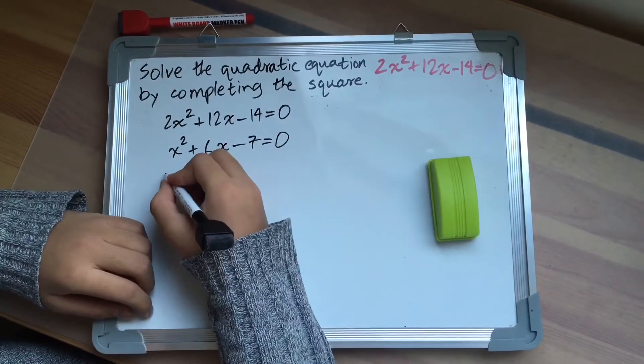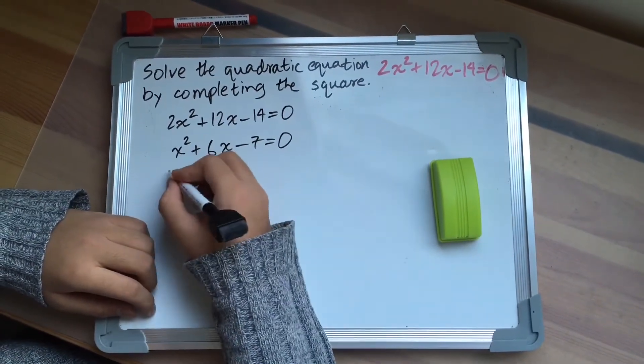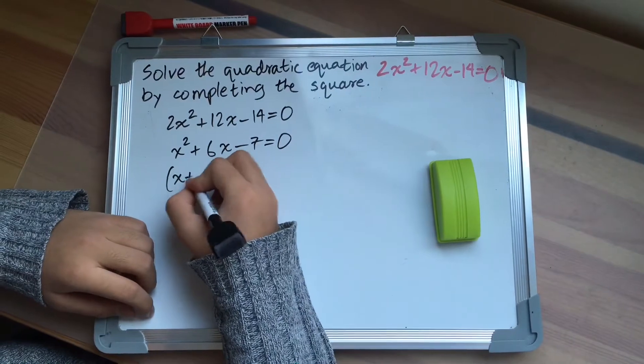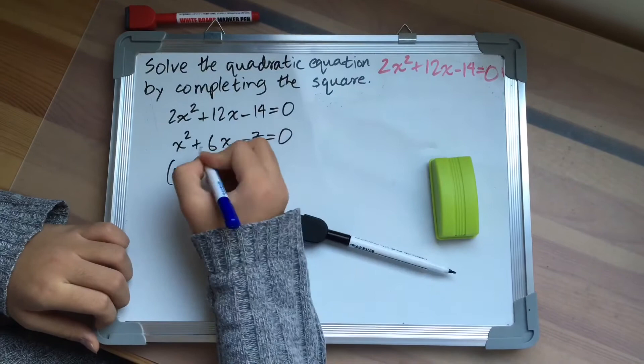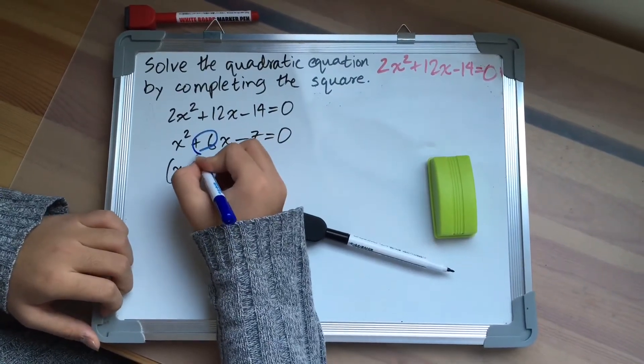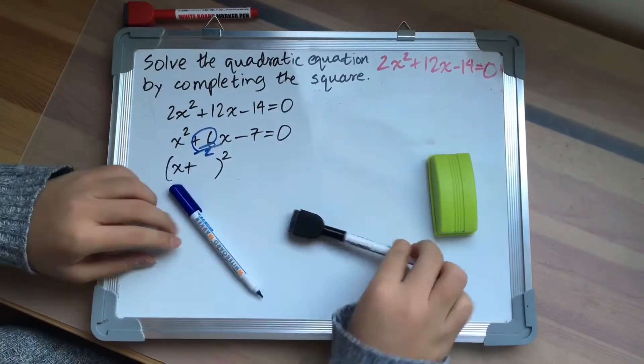Then write down a squared bracket which will be x plus a number, the whole squared. And the number will be the half of the coefficient of x, which will be 3.